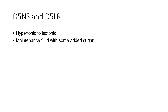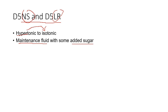D5 can be added to NS and LR as well. These make hypertonic solutions that eventually become isotonic, since NS and LR are isotonic at their base — unlike half NS which was hypotonic. D5 NS or D5 LR is a good maintenance fluid for people who have low sugars or are hypoglycemic, adding a little bit of sugar to their maintenance to keep them balanced.